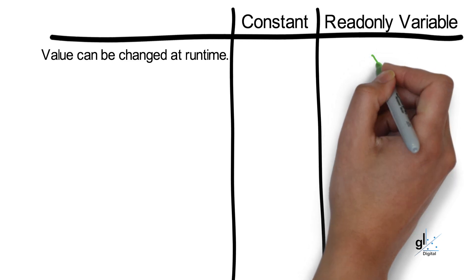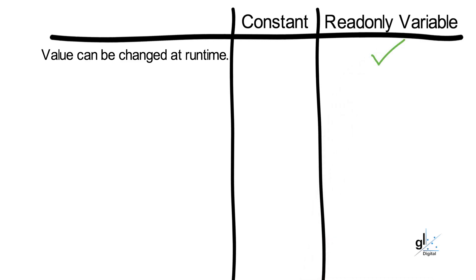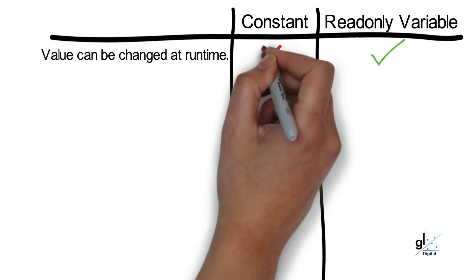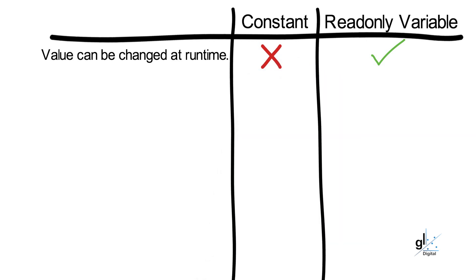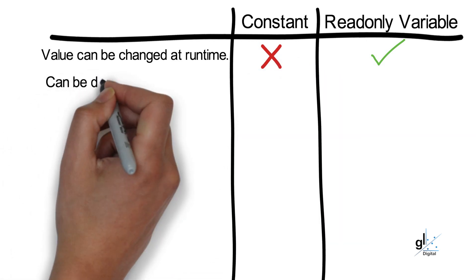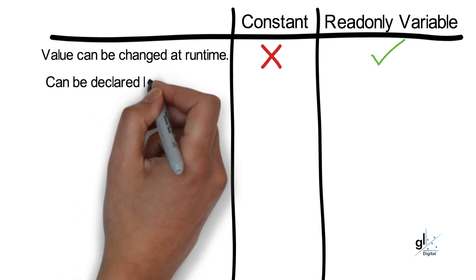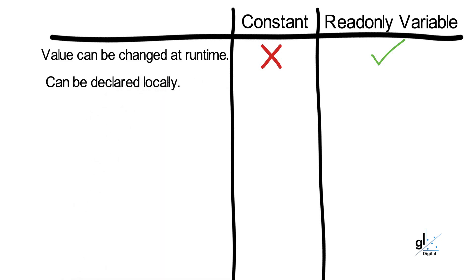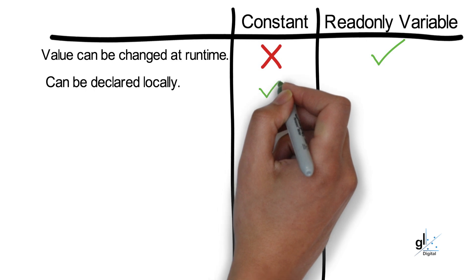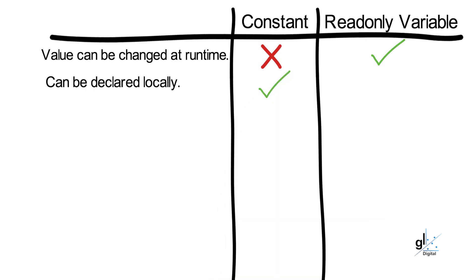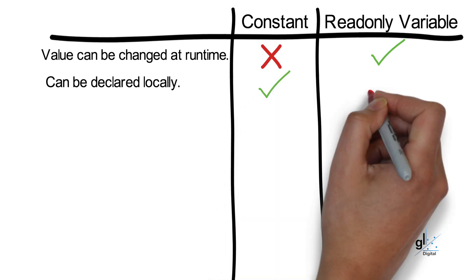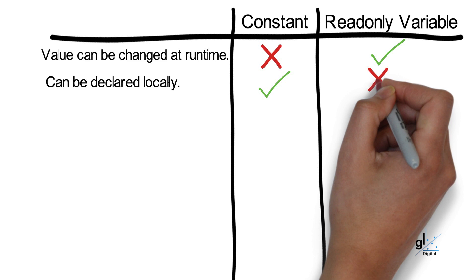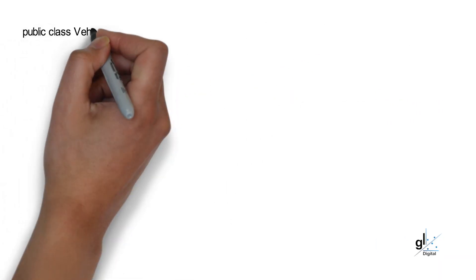Read-only variables can be declared and initialized on one line like a constant at compile time, but unlike a constant its value can also be changed within the constructor of a class. A read-only variable cannot be a local variable — it must be a member variable of a class. A constant, however, can be declared locally in a method.